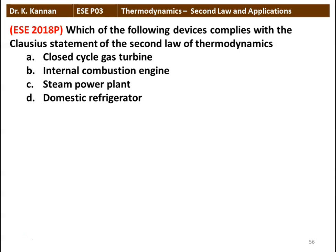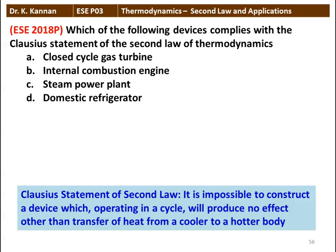Question number one: Which of the following devices complies with the Clausius statement of the second law of thermodynamics? The four options are closed cycle gas turbine, internal combustion engine, steam power plant, and domestic refrigerator. The Clausius statement states: it is impossible to construct a device which, operating in a cycle, will produce no effect other than the transfer of heat from a cooler to a hotter body. Without any external effect, it is difficult to transfer heat from a cooler body to a hotter body. The device working on the Clausius statement is the domestic refrigerator. The answer is domestic refrigerator.